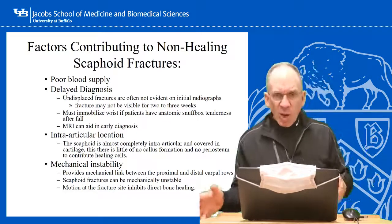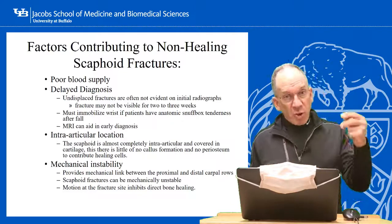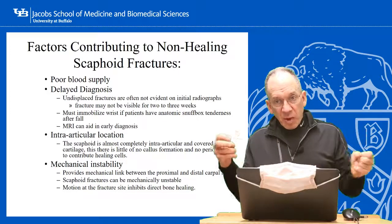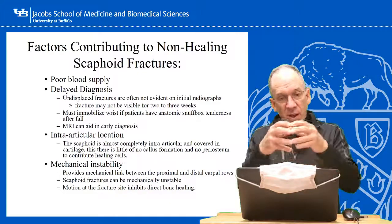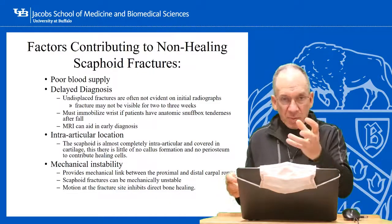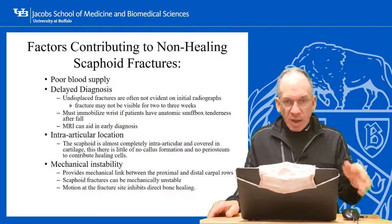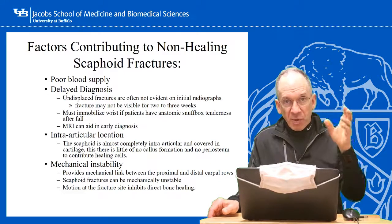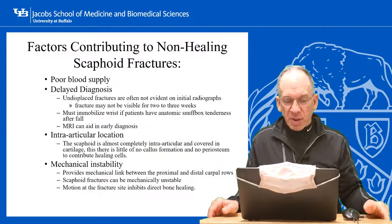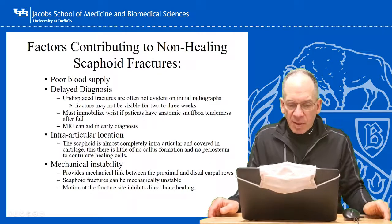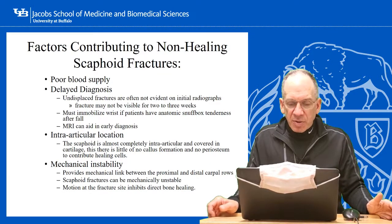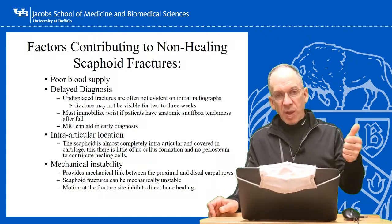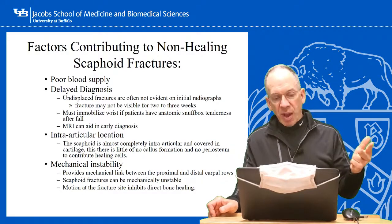Why don't scaphoids show up right away on X-ray? If the bone is not displaced, you simply won't see it. Why do they show up later? One response to fracture healing is growing blood vessels across the fracture site and laying down tissue that turns into cartilage and then bone. That whole healing mechanism produces a little bone resorption at the fracture site, which is when the fracture becomes visible — at about three to four weeks in a completely non-displaced scaphoid. It's also intra-articular and almost completely covered in cartilage, so no callus can form.